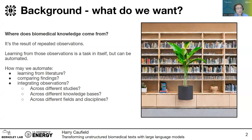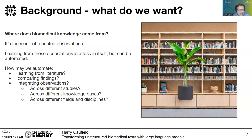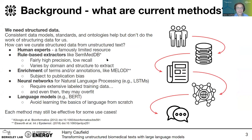We can think of it as the result of repeated observations, but really that's a task in itself — to learn from those observations and to automate that process. So how do we actually automate learning from literature, comparing findings, or even just integrating observations across studies, knowledge bases, and across entire fields and disciplines?